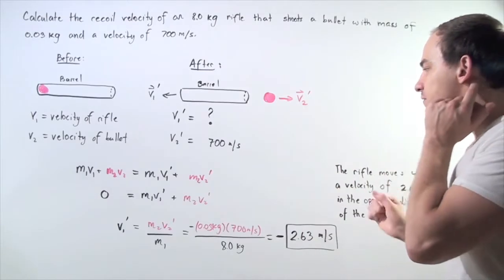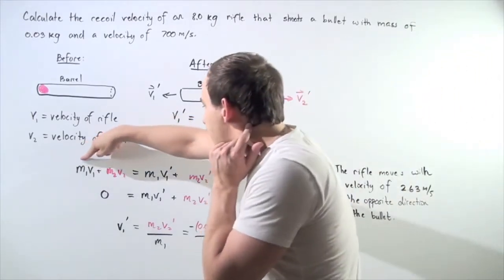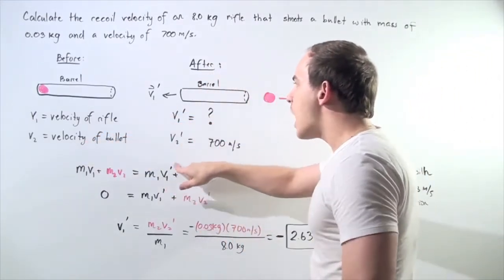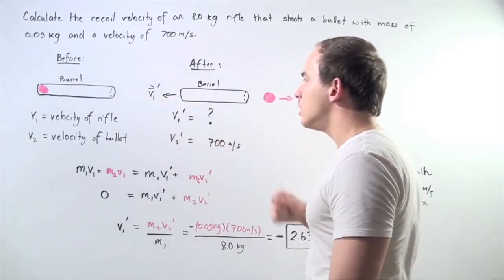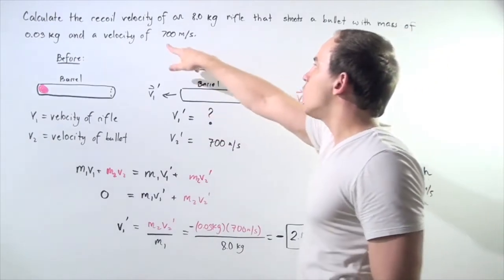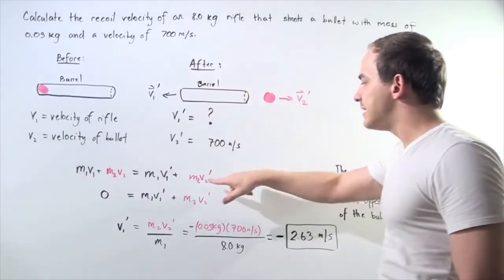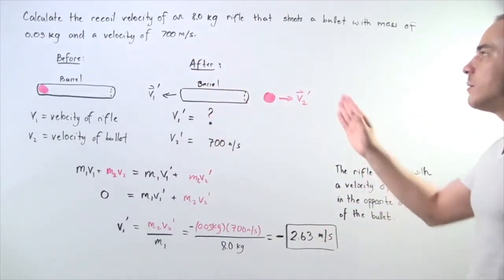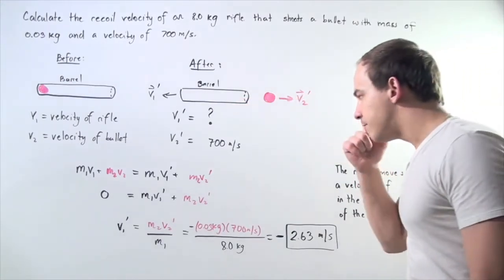We have the following equation where V1 prime is the recoil speed we're looking for and V2 prime is what we know. It's 700 meters per second, the speed with which the bullet leaves the barrel of the rifle.